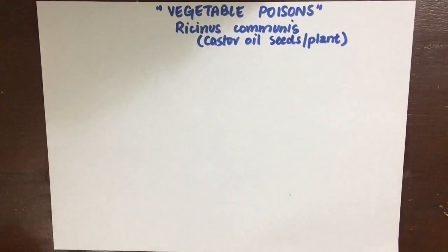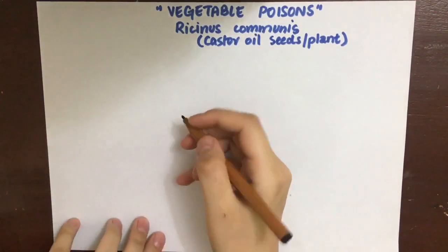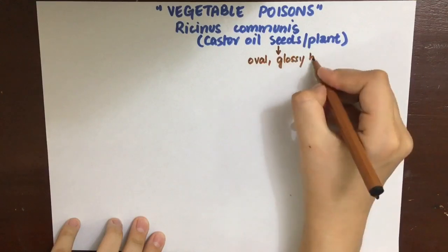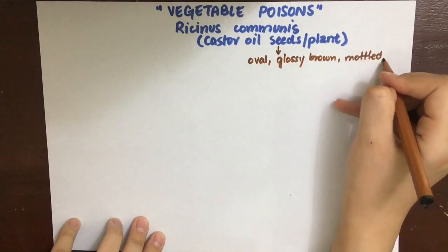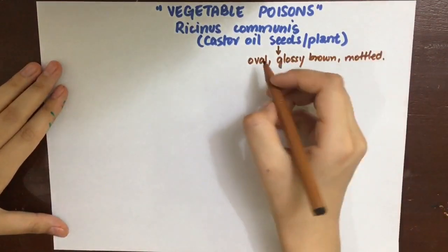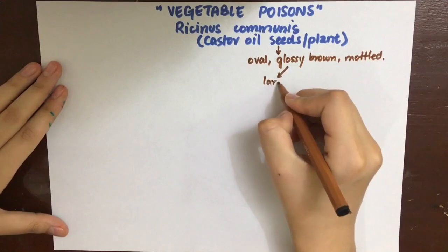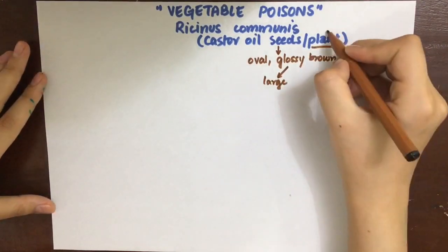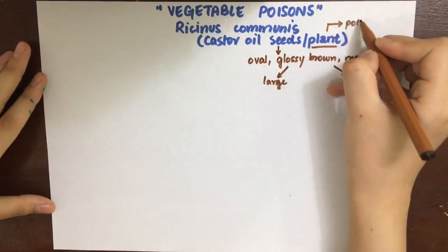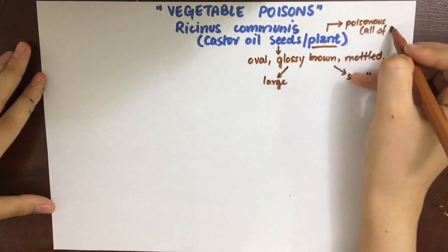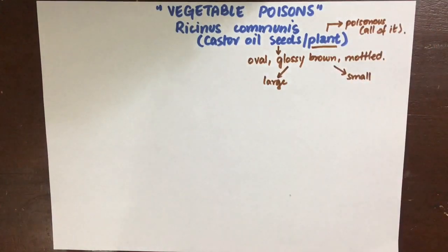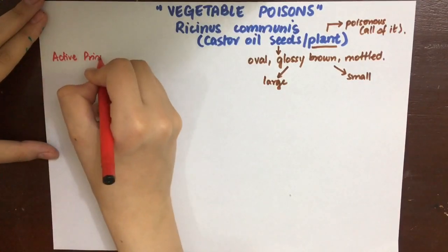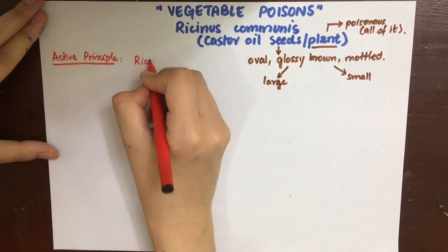The first vegetable poison is Ricinus communis, or castor oil seeds. In fact, the whole plant is poisonous. The seeds are oval, glossy, and brown in color with differently colored marked spots. There are two sizes of seeds — one large and one small. The small one resembles Croton tiglium seeds, which will be discussed in the next video.